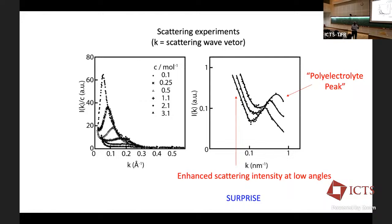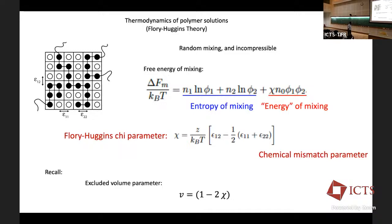Let me go back to Flory-Huggins theory. The basic assumptions are random mixing. The Flory-Huggins parameter chi is a chemical mismatch parameter that depends on the chemical details. And I already told you the excluded volume parameter V equals 1 minus 2 chi. The entropy of mixing goes as N1 log phi_1 plus N2 log phi_2, and the energy of mixing is given by chi phi_1 phi_2 times the total number of sites.